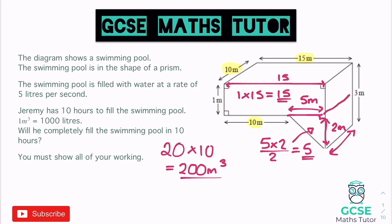So there's our volume: 200 metres cubed. Now let's look at the rest of the question. It says the swimming pool is filled at a rate of 5 litres per second, and already that stands out because our units are in metres cubed — so that's something we'll have to address. It also says Jeremy has 10 hours to fill the swimming pool. Will he completely fill it in 10 hours?